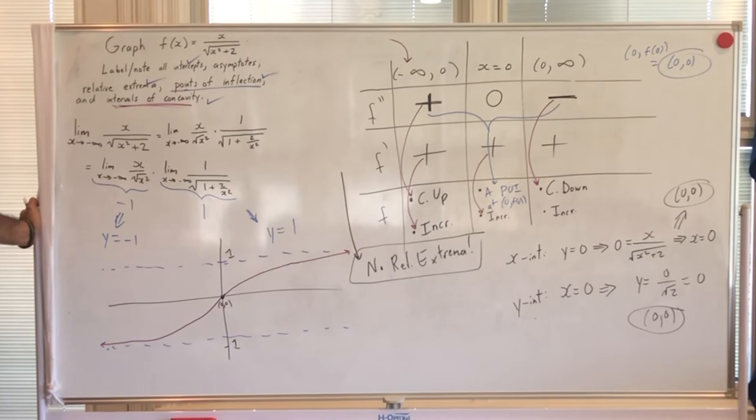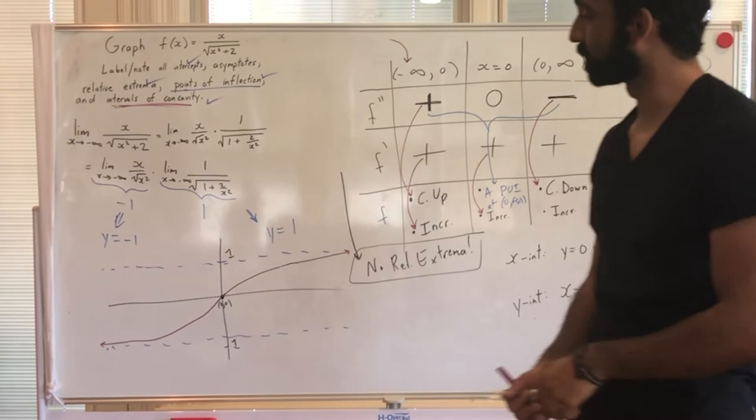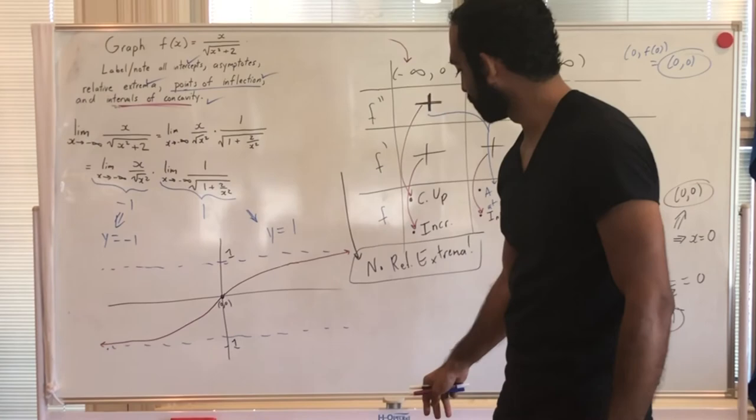This matches all our calculus details: f' is always positive (slope always positive everywhere), so the original graph is always increasing. We are incorporating all our knowledge — first derivative, second derivative, and pre-calculus — to sketch this graph.